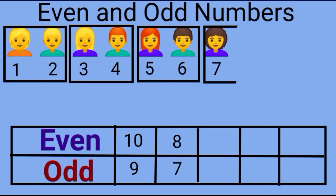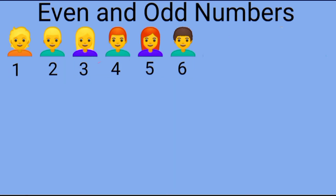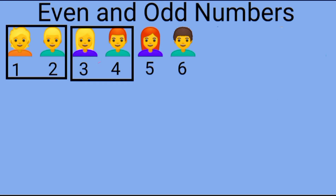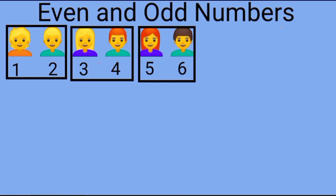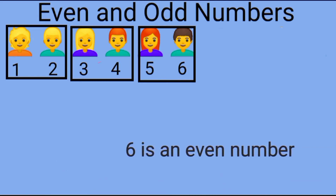Now what would happen if there were six students in the class? Let us pair up all the six students. Have all the students been paired up? Yes, all the students have been paired up. Does anyone get left over? No, no one is left over. Tell me children, is the number six odd or even? Yes, it is an even number.